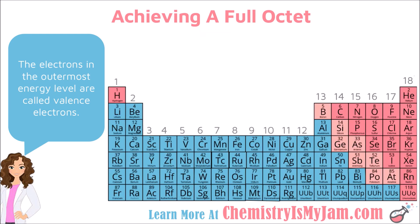Knowing the number of valence electrons is crucial to understanding ion charges. For the main body elements on the periodic table — skipping the transition metals — everything in group 1 has 1 valence electron, group 2 has 2, then 3, 4, 5, 6, 7, and 8. If you count from left to right for the main body elements, you'll see the number of valence electrons, the number of electrons in the outside energy level for that atom.